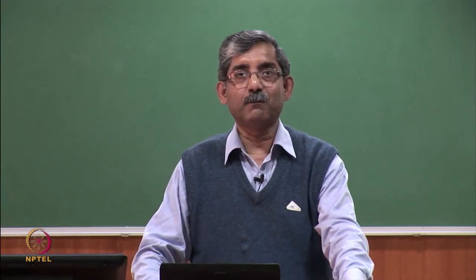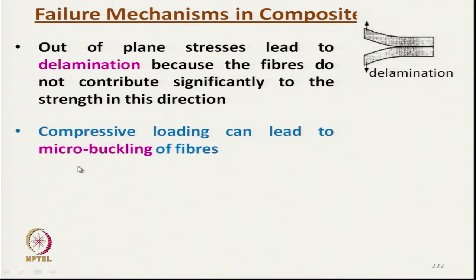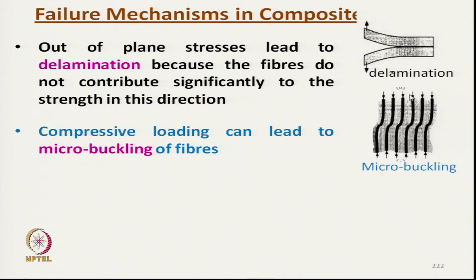Compressive load can lead to micro buckling of fibers. Once a compressive load is applied, micro buckling of fibers takes place because reinforcing fibers cannot compress lengthwise axially, whereas the matrix can get compressed because of its higher elasticity — resulting in micro buckling. This is one of the reasons for composite failure under high pressure.